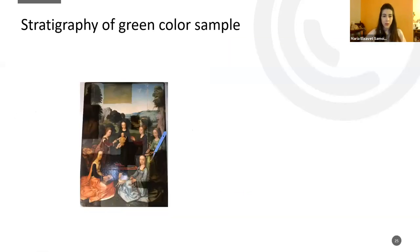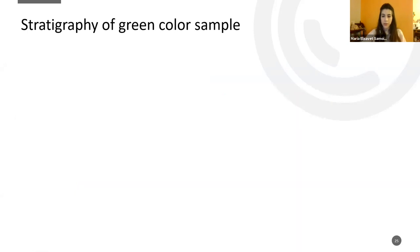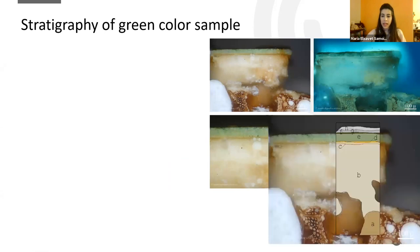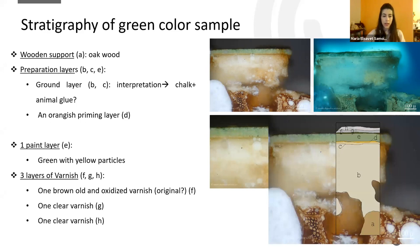The second sample was taken from the green color area. Again, we can see the wooden oak support, the preparation layer with the ground and the orange priming layer. For the green color, there was only one paint layer — the green one. We also found three layers of varnish: the original one and two additional clear varnishes.